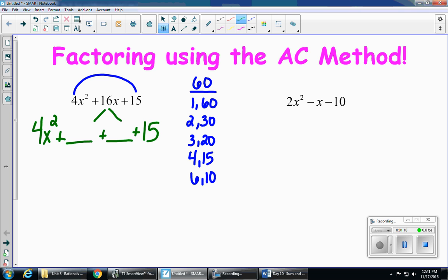And I'm using my sign trick to find out that they're both positives. So now I'm looking for one of those factors of 60 that would give me 16. So 6 and 10 work because 6 plus 10 would give me 16. So I have a 10x and I have a 6x.